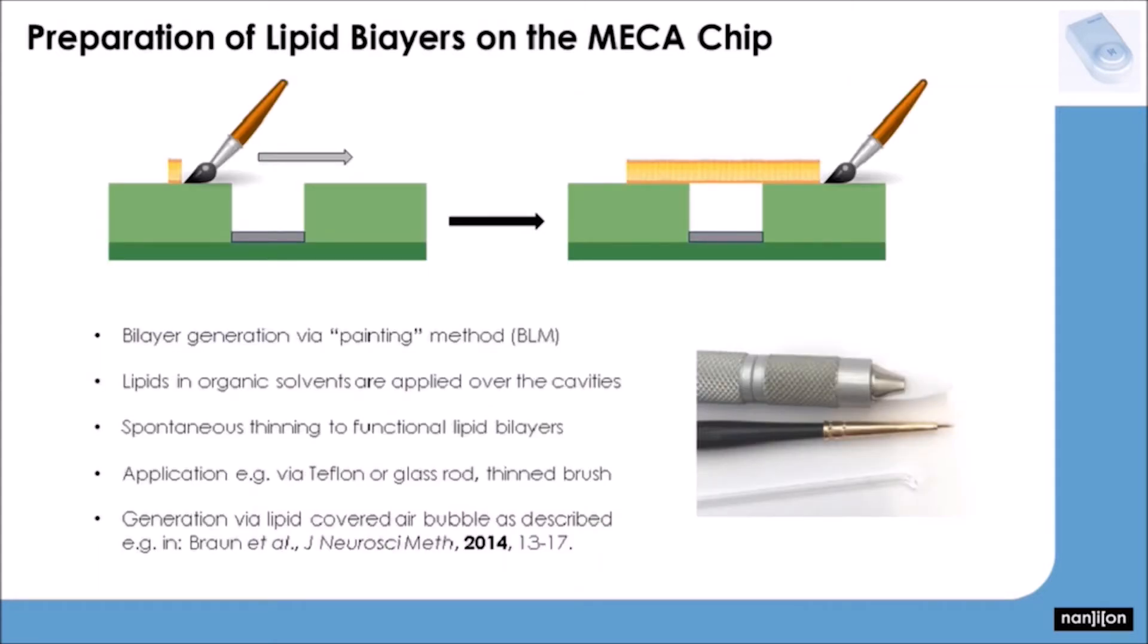And how exactly can you generate lipid membranes on this chip? Well, you would span the cavities in the chip's surface with a lipid membrane each. These membranes are painted from lipids and organic solvent, so the classical black lipid membrane approach. You could therefore use a paintbrush or paint with a Teflon tip or a glass rod. All works just fine. But we would, however, recommend to generate the bilayers with a lipid-covered air bubble. I will explicitly demonstrate this method of painting bilayers with an Eppendorf pipette later on in the following video.